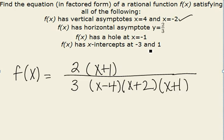f(x) has x-intercepts at -3 and positive 1. So that's going to give us an x+3 and an x-1 in the top, since those tell us where our intercepts are.